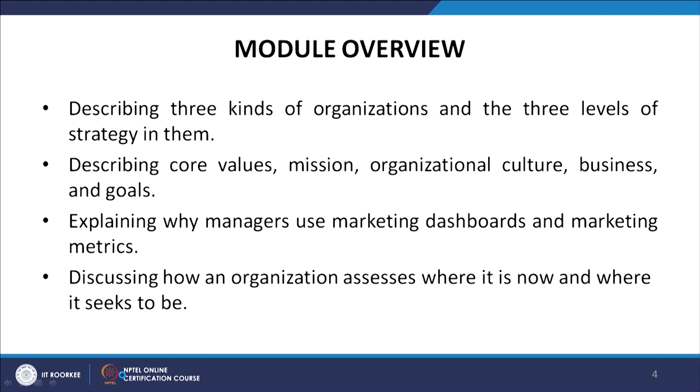This module starts with describing the three kinds of organization and the three levels of strategy in them. Then it describes what are core values, mission, organizational culture, business and goals. Then we will explain why managers use marketing dashboards and marketing metrics. And finally, we will discuss how an organization assesses where it is now and where it seeks to be.